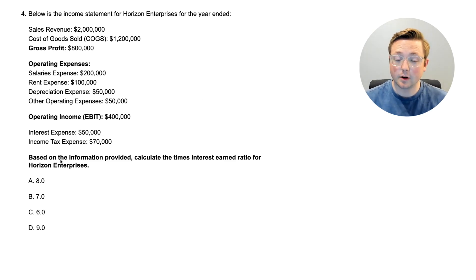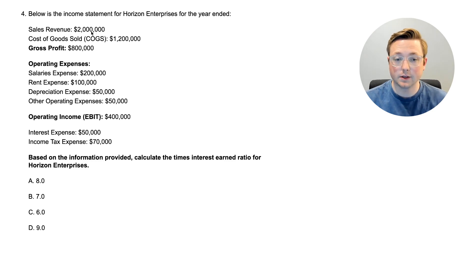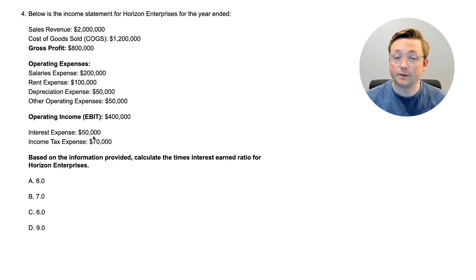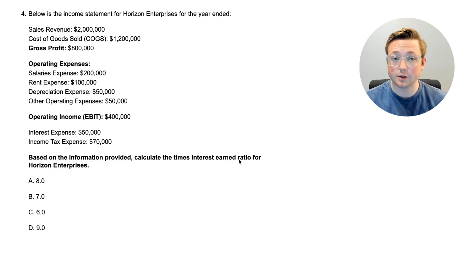Here we are at question four. As always, read the last part of the question: based on the information provided, calculate the times interest earned ratio for Horizon Enterprises. This is a new ratio we haven't talked about yet. Below is the income statement for Horizon Enterprises. They have sales revenue, cost of goods sold, gross profit of $800,000, operating expenses including salaries, rent, depreciation, and other operating expenses, giving operating income or earnings before interest and taxes of $400,000, interest expense of $50,000, and income tax expense of $70,000.